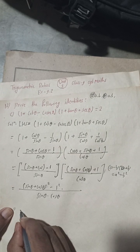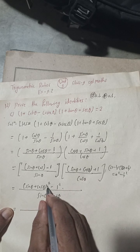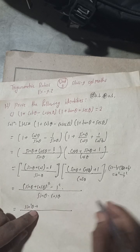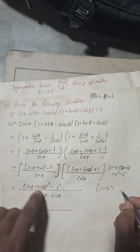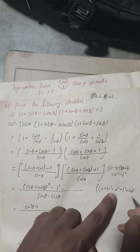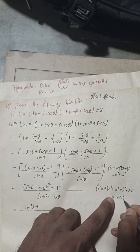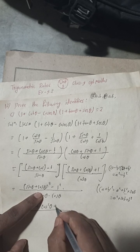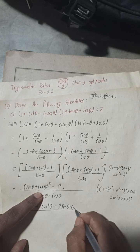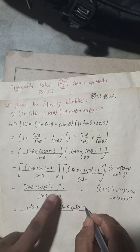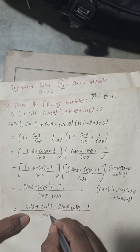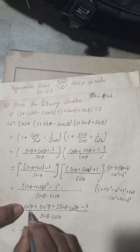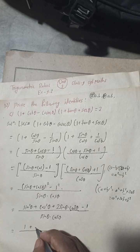Expanding: sin²θ + cos²θ + 2 sin θ cos θ − 1, all over sin θ cos θ. We know that sin²θ + cos²θ = 1, so that simplifies to 1 + 2 sin θ cos θ − 1, over sin θ cos θ.